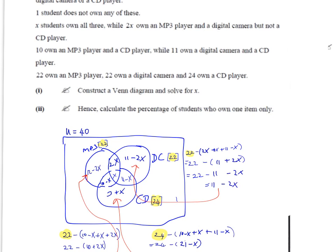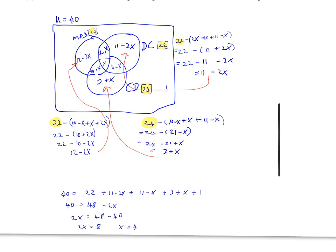So 22 plus 11 minus 2x plus 11 minus x plus 3 plus x plus 1, all of that gives you 40. That's the equation you're looking for. Just to repeat that again, this 22 comes from all of this set, and then we're adding on the 11 minus 2x, the 11 minus x, the 3 plus x, and the 1. All of that gives you 40.